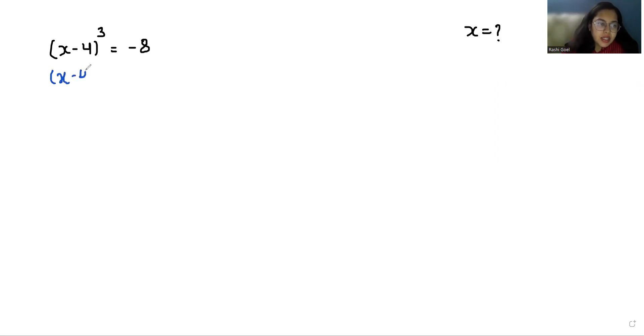We can write this as (x - 4)³ + 8 = 0. That's (x - 4)³ + 2³ = 0.